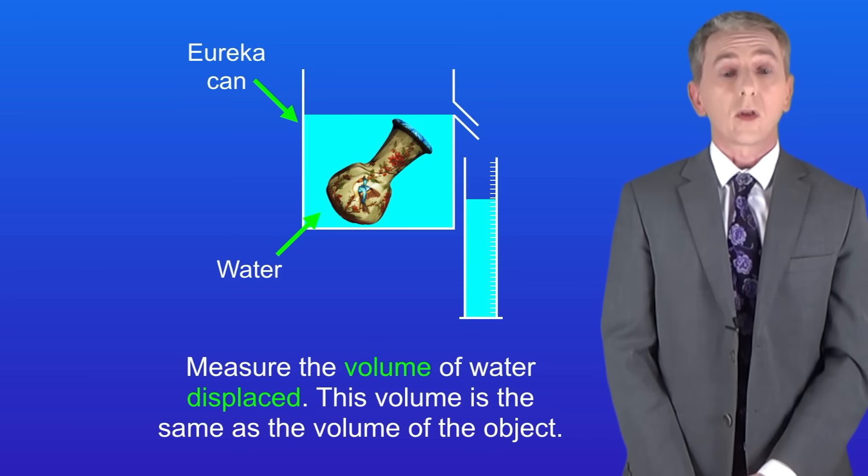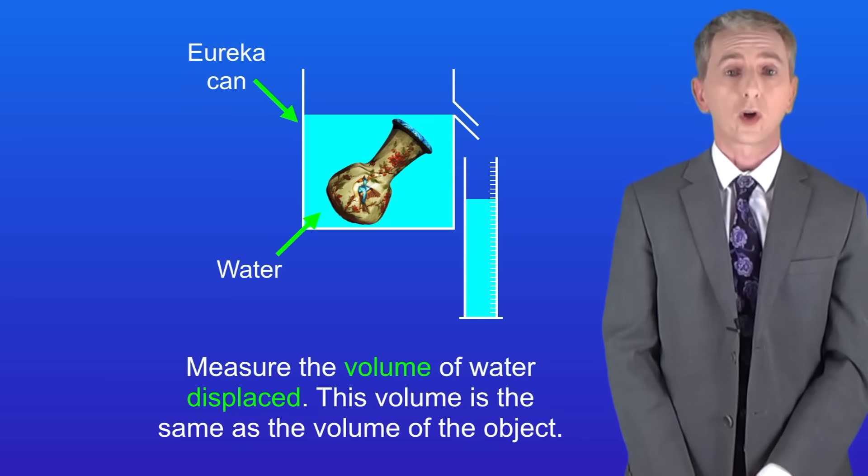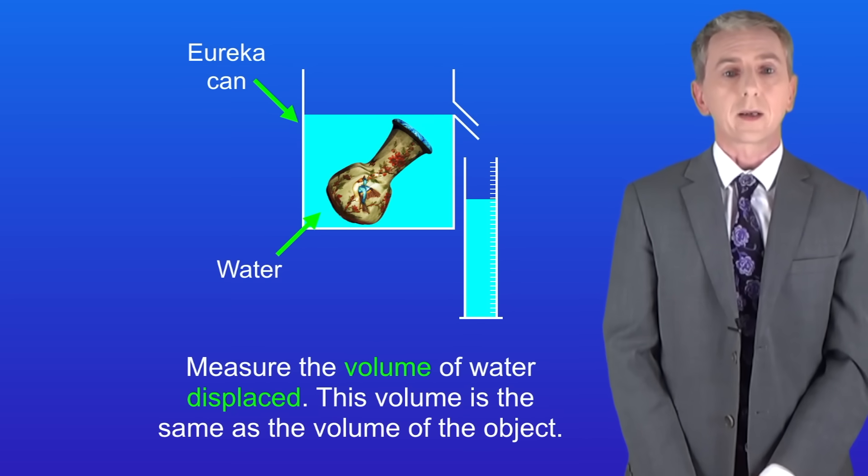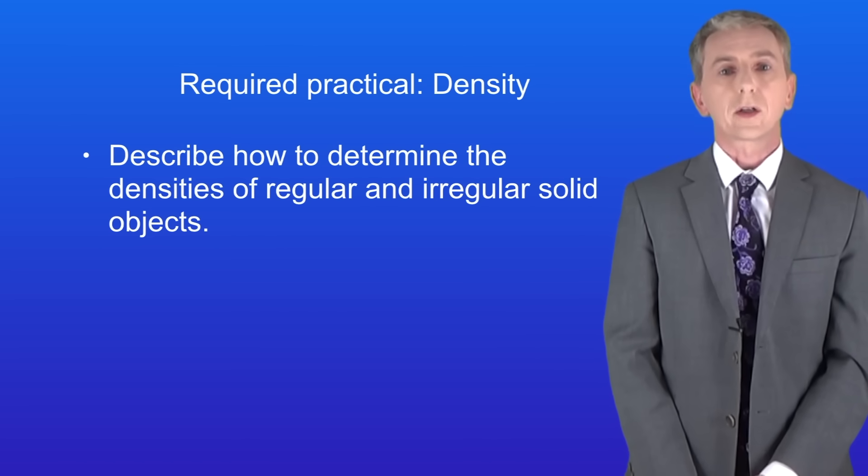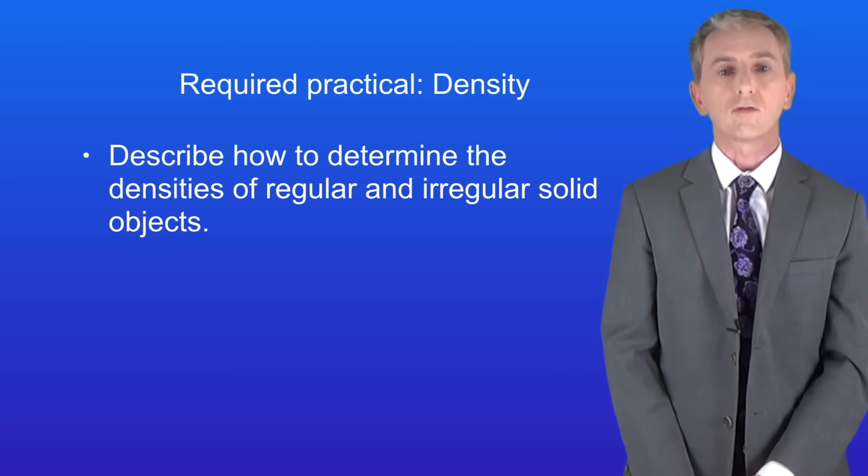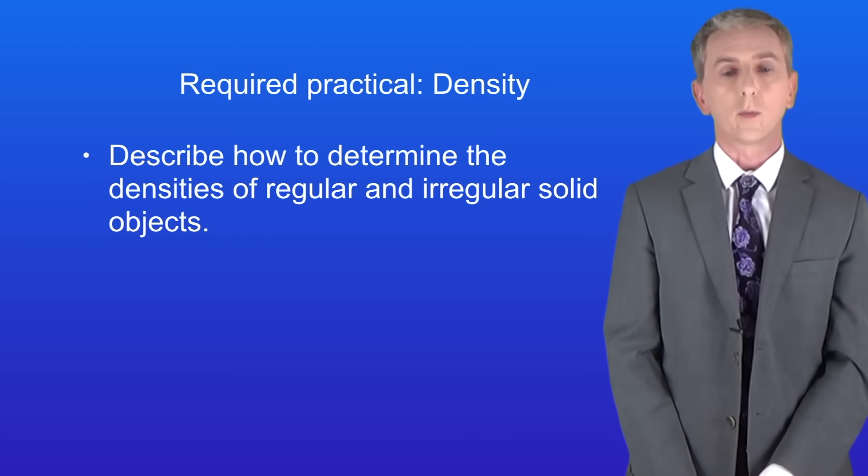Remember that you'll find plenty of questions on this Assessed Practical in my revision workbook and you can get that by clicking on the link above. Okay so hopefully now you should be able to describe how to determine the densities of regular and irregular solid objects.